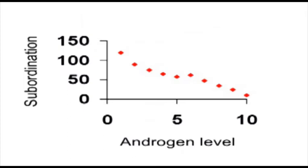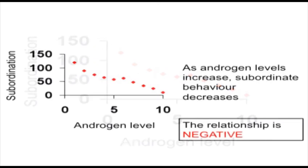Let's look at this example. This is the same kind of scatter plot, but here we've plotted subordination — a measure of submissive behaviour — against androgen levels. And here what we see is that the pattern is the opposite: as androgen levels increase, subordinate behaviour decreases. That relationship we would say is a negative relationship.